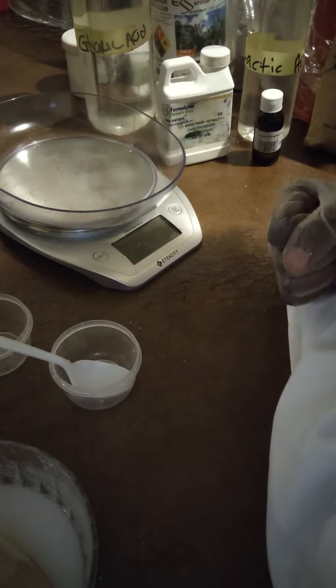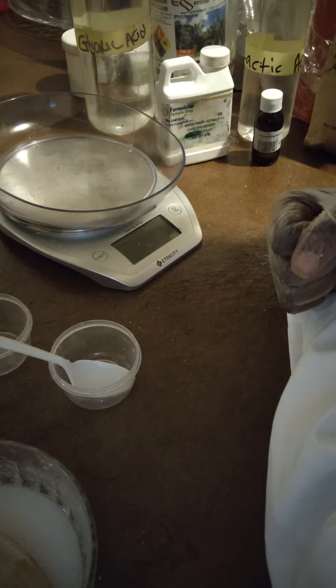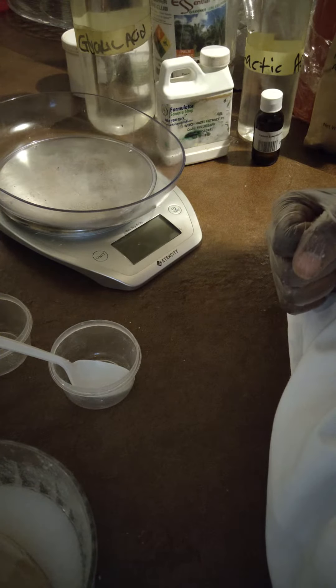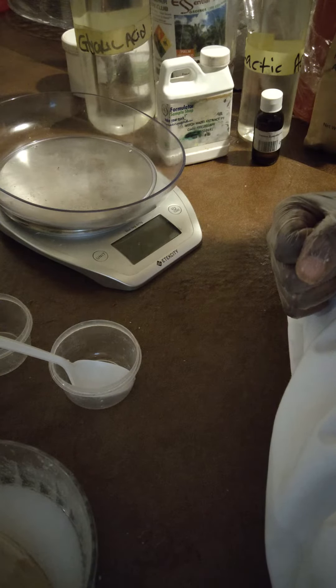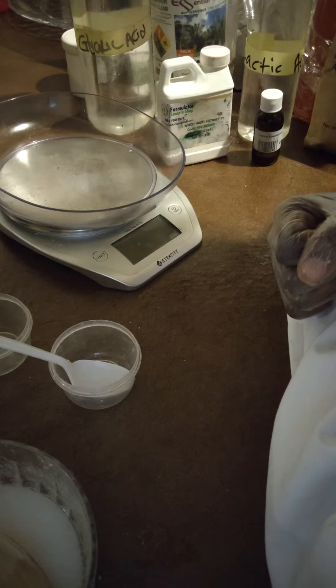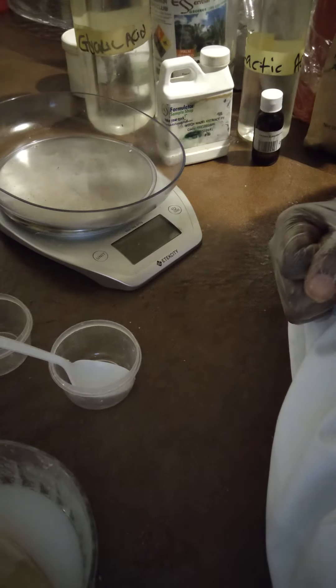Peeling oil does this by combining a mixture of AHA and BHA acids. AHA acids are key in exfoliating or peeling the skin - it stands for alpha hydroxy acids. BHA acids are also good for peeling the skin, but their penetration is different. BHA stands for beta hydroxy acid.